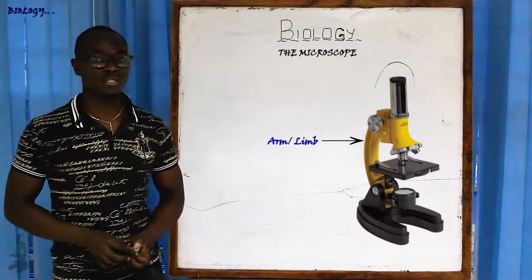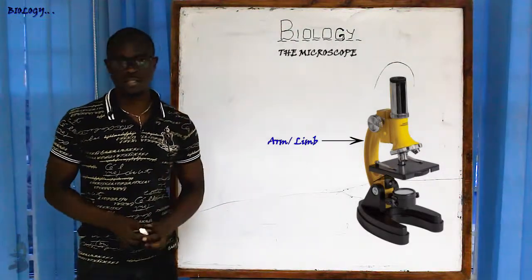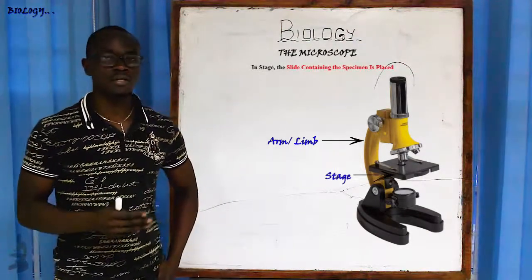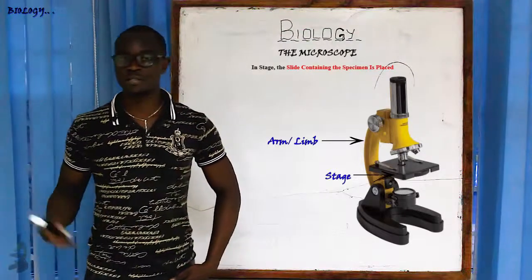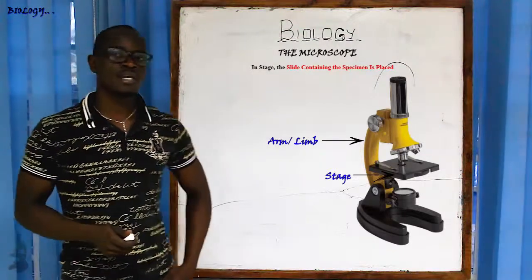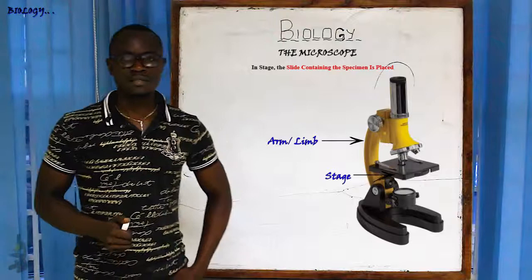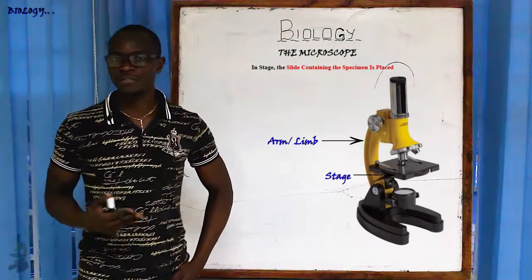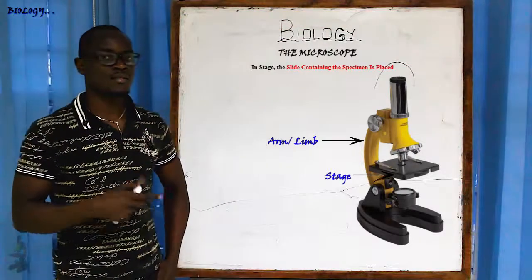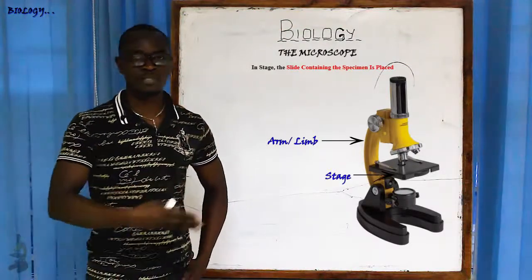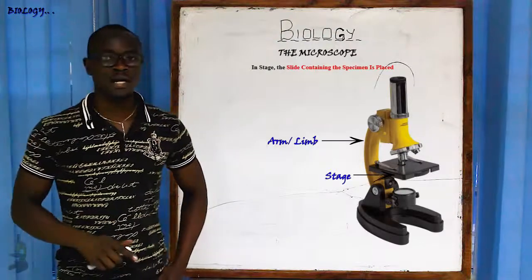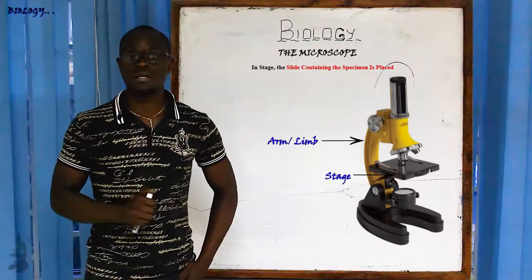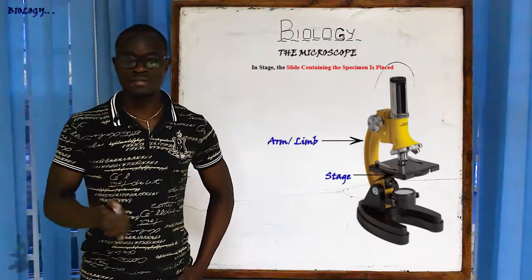Next we have the stage. The function of the stage is where the slide containing the specimen is placed. Some books simply say the stage is where the slide is placed, but the best definition is that it is where the slide containing the specimen is placed, because for the microscope to work, the slide must have the specimen for something to be seen.